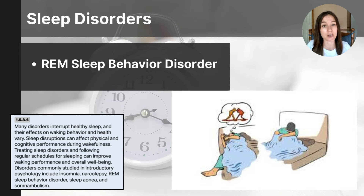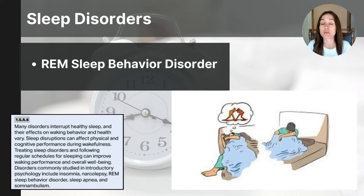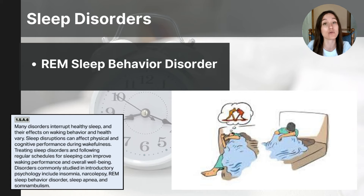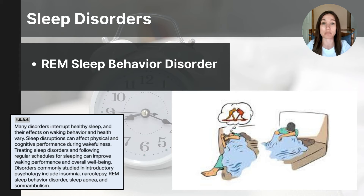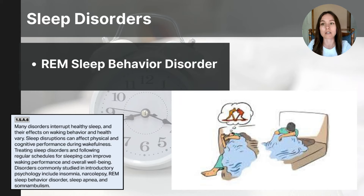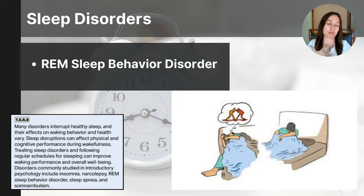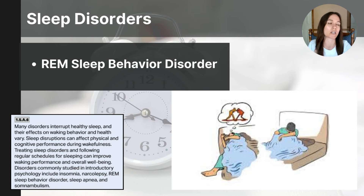The last sleep disorder to be familiar with is REM sleep behavior disorder. This affects 1 in 100 adults, and 1 in every 50 adults over the age of 50. REM behavior disorder is a sleep disorder where individuals act out their dreams during REM sleep due to a lack of muscle paralysis that normally occurs during this stage. This can result in physical movements like kicking, punching, or jumping, potentially leading to injury to themselves or others. Treatment typically involves medications to reduce or prevent physical movements, ensuring a safe sleeping environment by removing sharp or dangerous objects, addressing underlying neurological conditions, and making lifestyle changes to improve sleep quality.